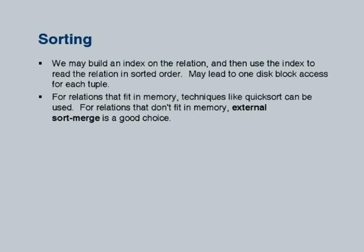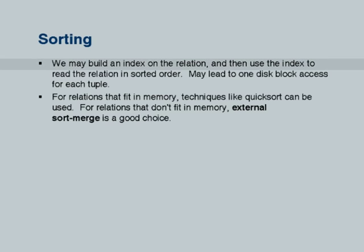Moving on, the next set of operations are all based on either sorting or hashing. First let us look at how to sort data and then using sorting we will see how to do a number of other operations. Sorting is a very fundamental operation in databases, and hashing turns out to be very symmetrical to sorting. One naive way of sorting is to build an index on the relation, insert records one by one, then read the leaf pages to find record IDs and fetch records one at a time. This turns out to be a terrible way for very large relations because you may end up doing one random I/O per record, which is very, very slow.